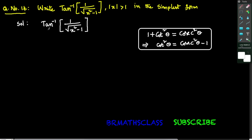To write the simplest form of tan inverse of 1 divided by square root of x squared minus 1, we take x equal to cosecant theta. If x is cosecant theta, then theta is cosecant inverse x.